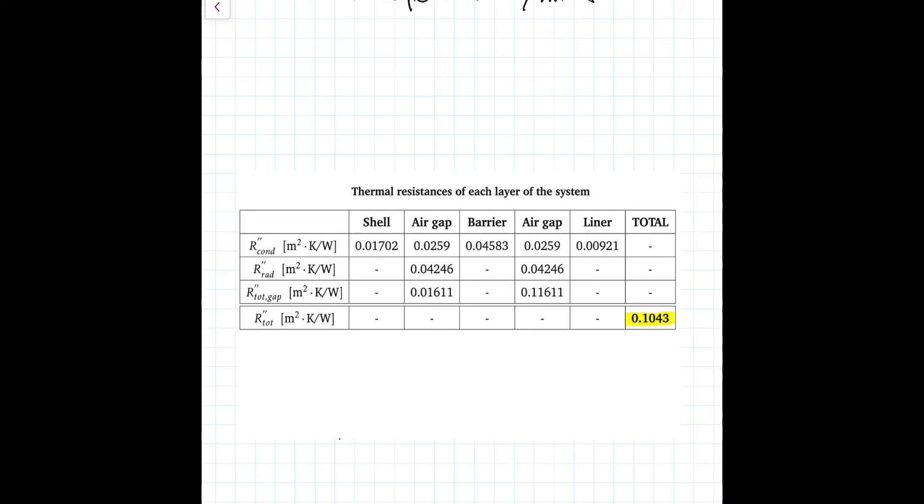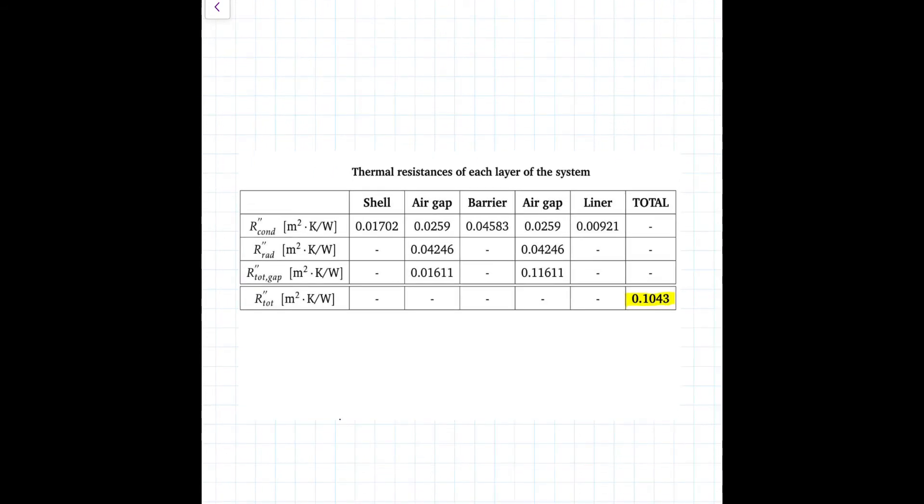Now, before leading to part B, I would like to spend a minute commenting on some of the thermal resistances you see here. The most protective layers, as you can see, of the firefighters' clothing are the moisture barrier, whose thermal resistance is almost three times larger than the one of the shell in the small air gaps, and the liner.